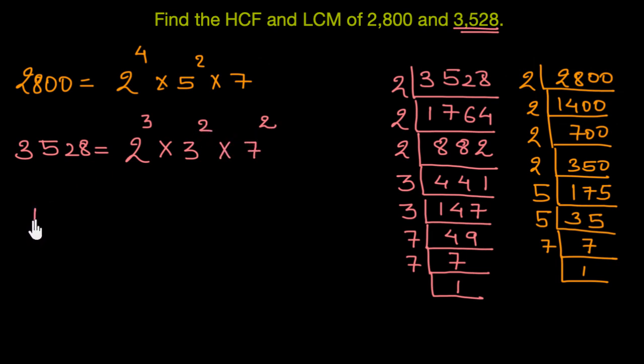Now, let's see how we can find the HCF first. Let's find the HCF first. Now, in order to find the HCF, we would pick common prime factors along with their smallest available powers. For example, in this case, the common prime factors are 2. 3 is not common because 3 is only available in 3,528. Similarly, 5 isn't common. So we would pick 7 because 7 is the common factor again. And then we need to pick them with their smallest available powers. In case of 2, it is 3. And in case of 7, it is 1.